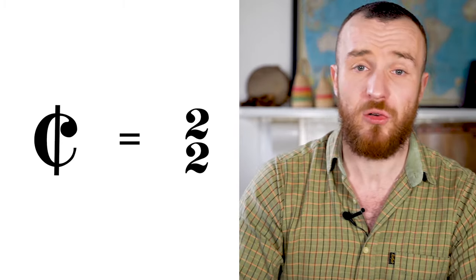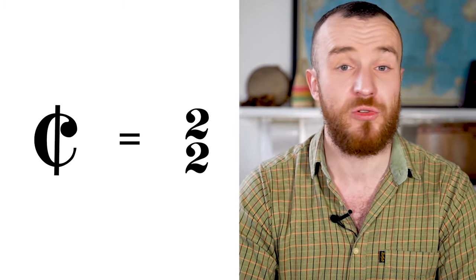Sometimes you can also see the C has a vertical line through it, just like this, and this makes it cut common time, which represents two two time. So cut common is exactly the same as two two time.